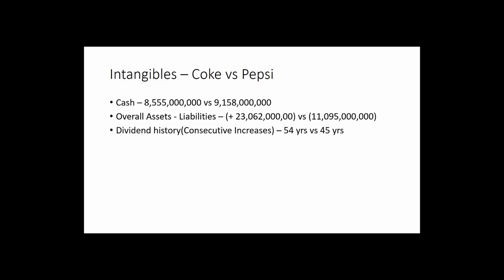Dividend history is one thing you can't really fudge. If a company is paying you a dividend, it means they're making money. Consecutive dividend increases — Coke for 54 years in a row and Pepsi for 45 years in a row — tells you this company is doing well. Think of all the things that have happened economically in the last 50 years: several market crashes, wars, the oil crisis in the 70s. Yet both these companies have still been able to crank out profits.